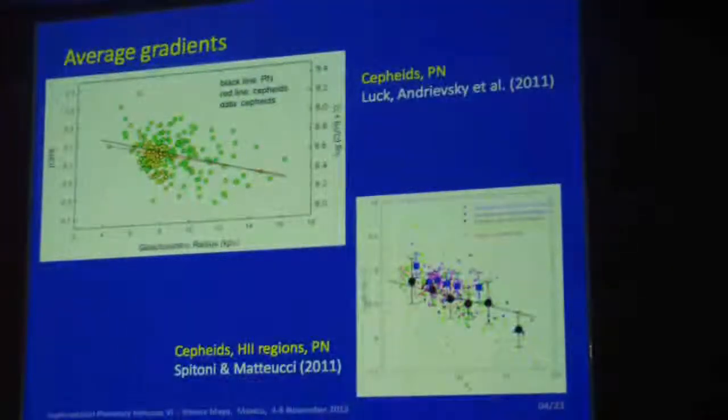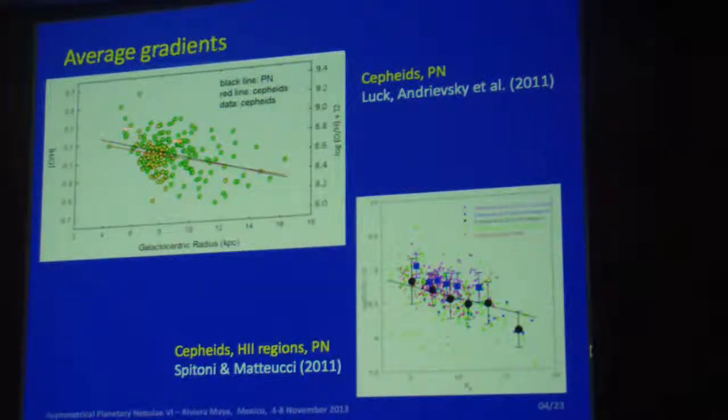These are examples of average gradients. This is for Cepheids and planetary nebulae. This is also for Cepheids, HII regions and planetary nebulae. Most people just try to fit a straight line for gradients. That is what we call the average gradient. But that is not the whole story.